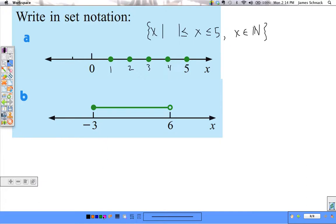Give the second one a try. Here we go. The set of all x's such that x is between negative 3 and 6, and we need to include negative 3. We need to stipulate that x is an element of the real numbers because it's everything in between negative 3 and 6.